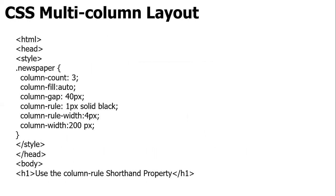For the CSS multiple column example, open the HTML tag, head tag, and style tag. The class 'newspaper' contains the properties: column-count 3, column-fill auto, column-gap 40 pixels, column-rule 1 pixel solid black, column-rule-width 4 pixels, and column-width 200 pixels. Then close the style and head tags. Open the body tag, with H1 reading 'use the column-rule shorthand property'.